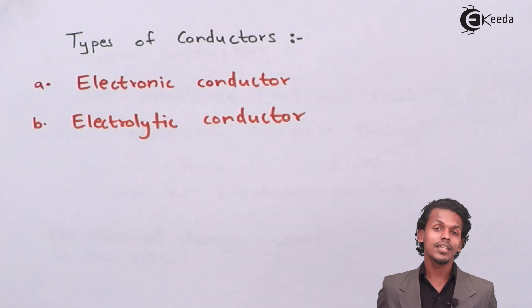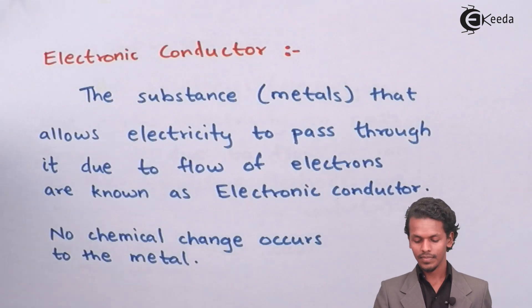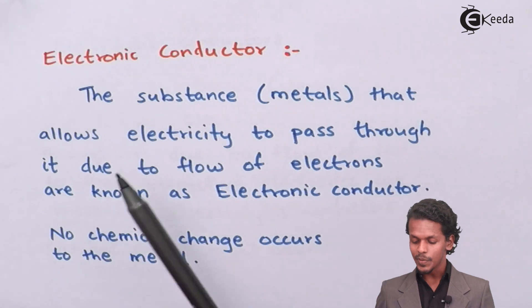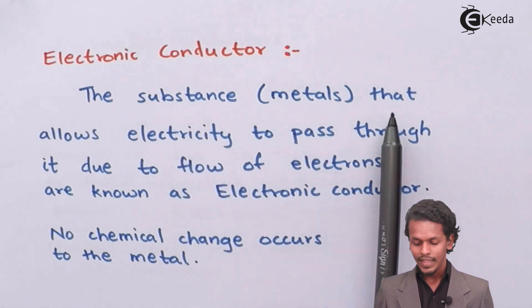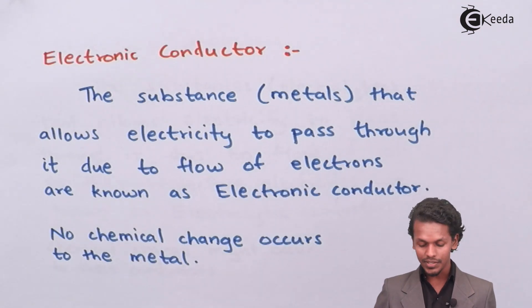Both conduct electricity, but let us see the deep knowledge about what is electronic conductor and what is electrolytic conductor. Electronic conductor says that the substance, usually a metal, that allows electricity to pass through it due to flow of electrons is known as electronic conductors.